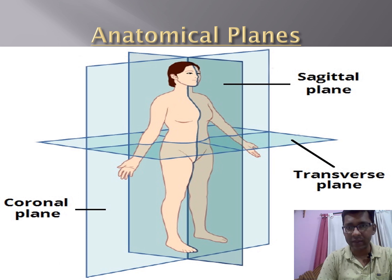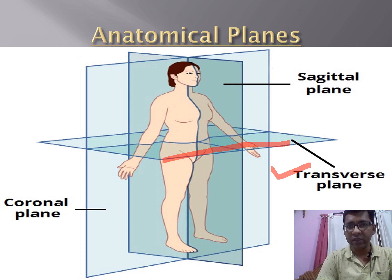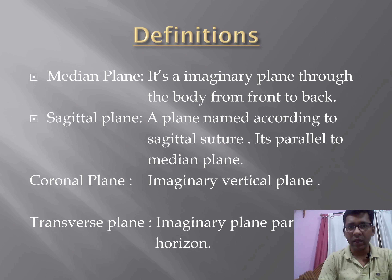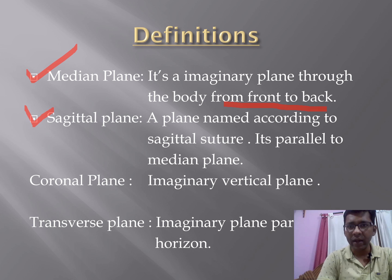There are three anatomical planes. The transverse plane cuts the body transversely. The sagittal plane cuts the body vertically. The coronal plane cuts the body at a slight angulation. In definitions: the median plane is an imaginary plane through the body from front to back. The sagittal plane is named according to the sagittal suture and is parallel to the median plane. The coronal plane is an imaginary vertical plane, and the transverse plane cuts the body transversely.